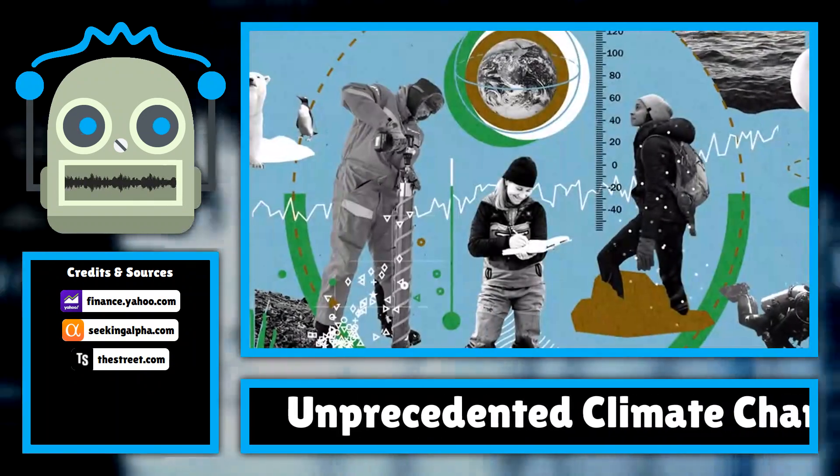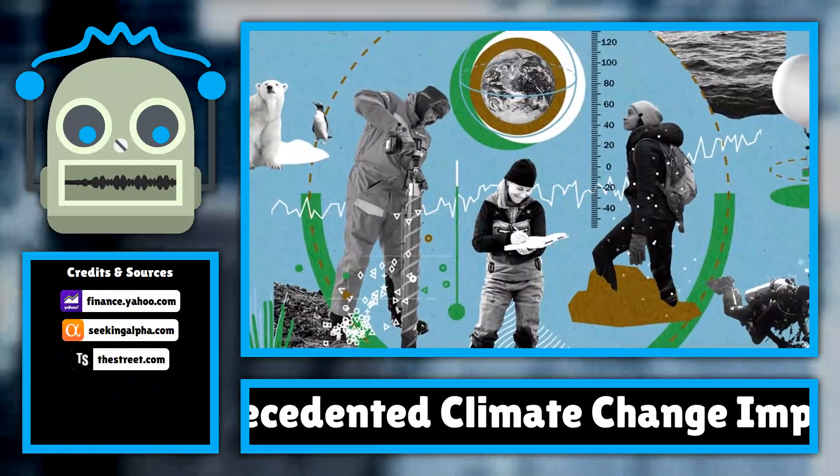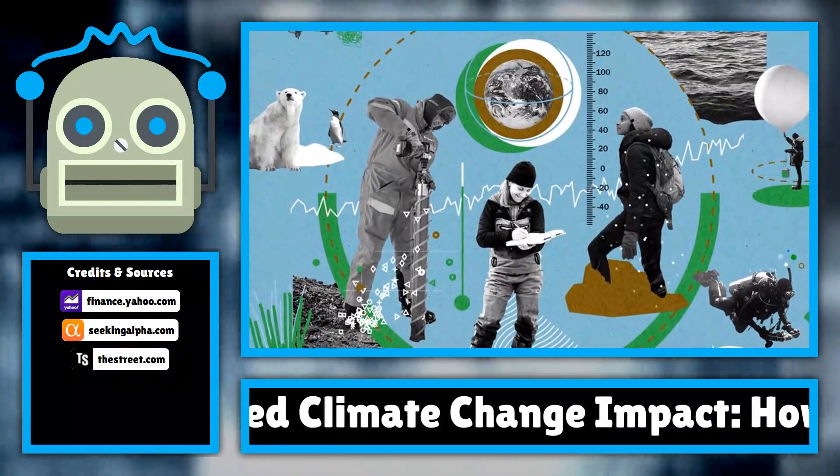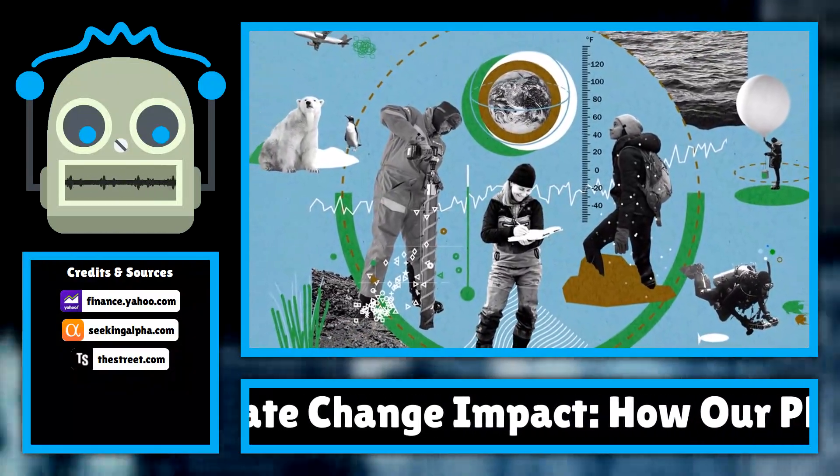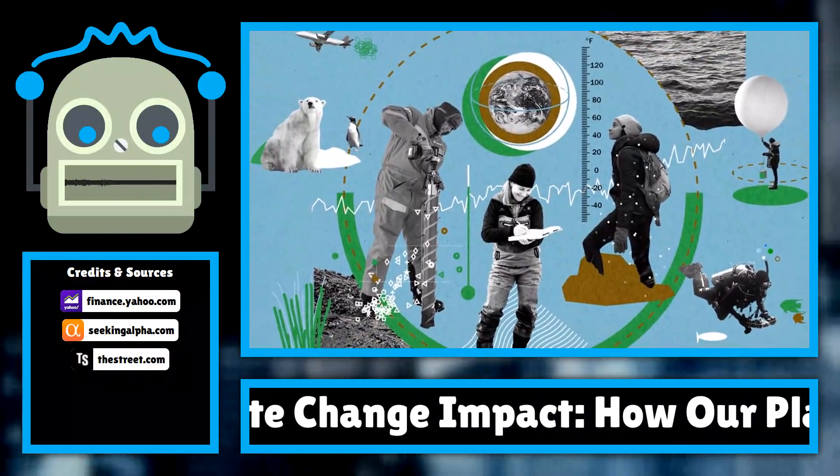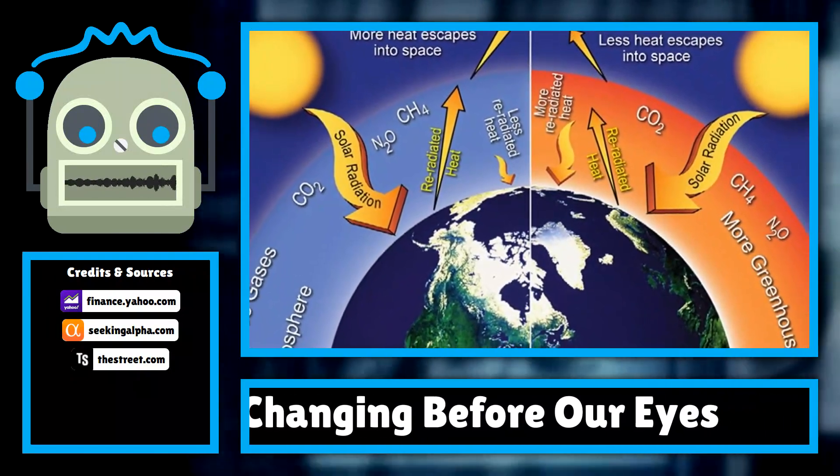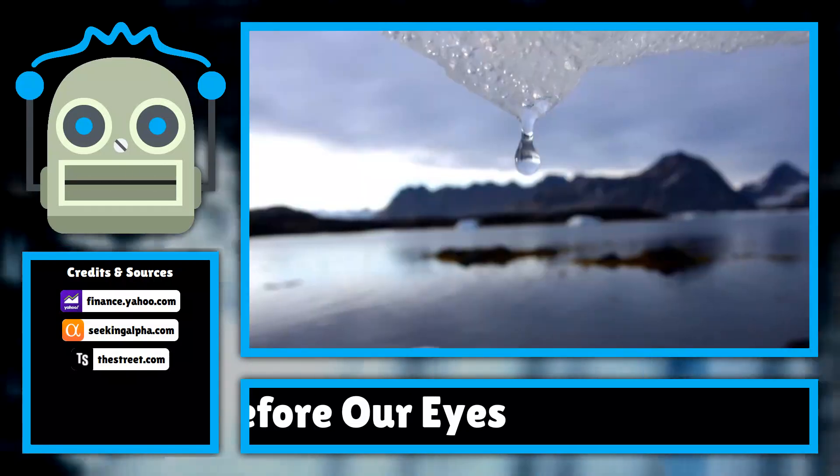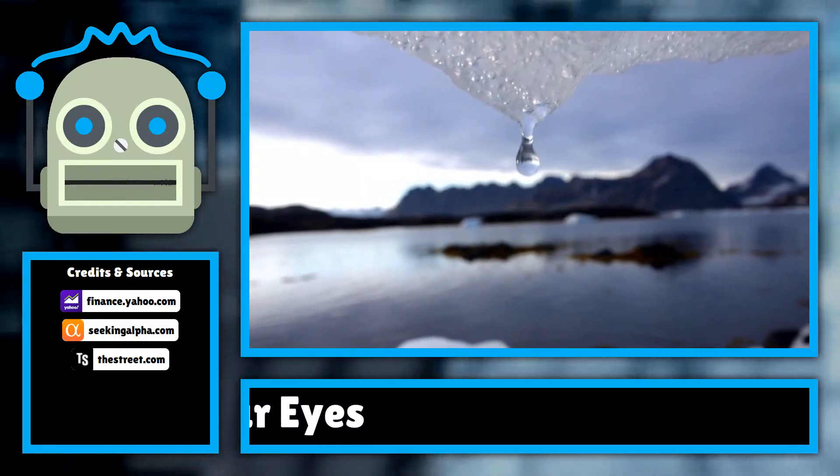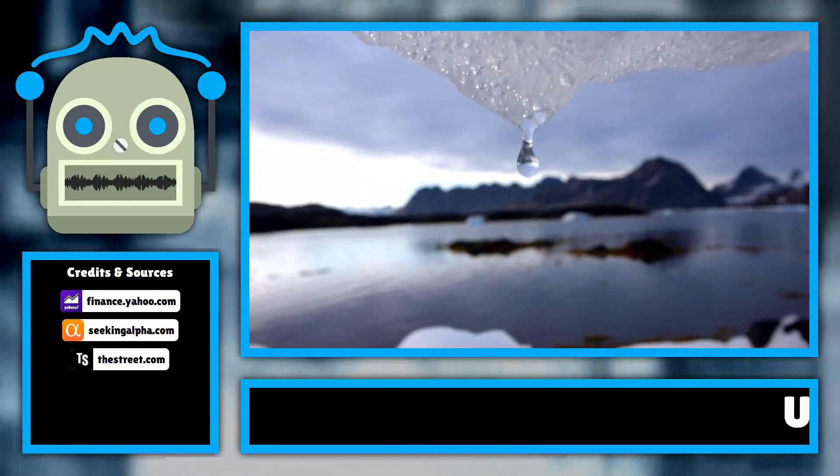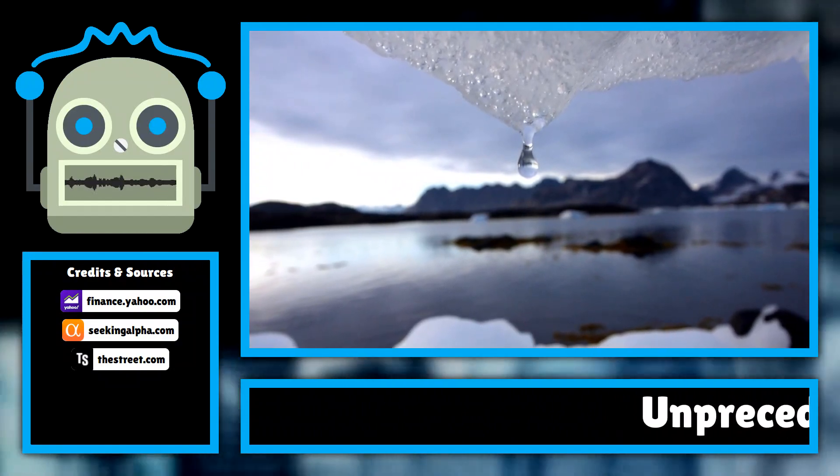In a shocking turn of events, scientists have reported that the effects of climate change are being felt more intensely than ever before. Recent studies reveal that global temperatures continue to rise at an alarming rate, with 2023 on track to be one of the hottest years on record. The impact of these rising temperatures is not just a distant threat. It is happening right now, affecting ecosystems, wildlife, and human populations across the globe.